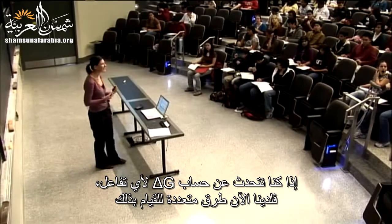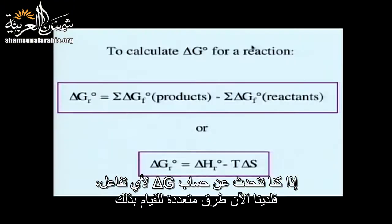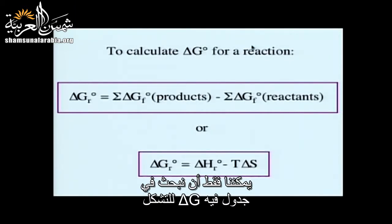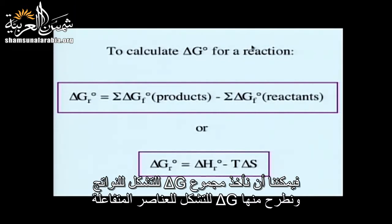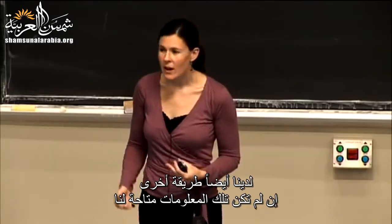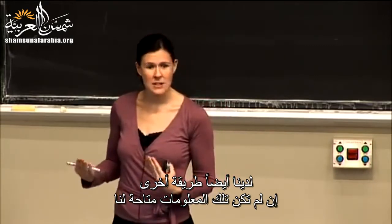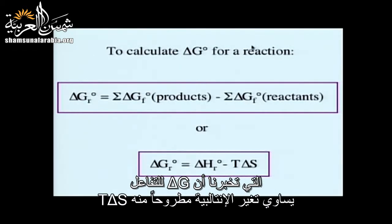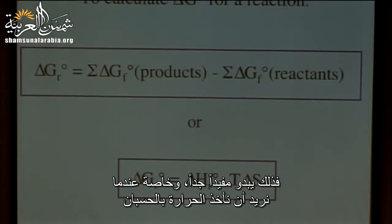If we're talking about calculating delta G for any reaction, we now have several ways to do it. The first is very analogous to thinking about delta H: we can look up a table of delta G of formation values, take the sum for products and subtract the sum for reactants. We also have another way using the equation delta G equals delta H minus T delta S, which is especially helpful when we want to take temperature into consideration.